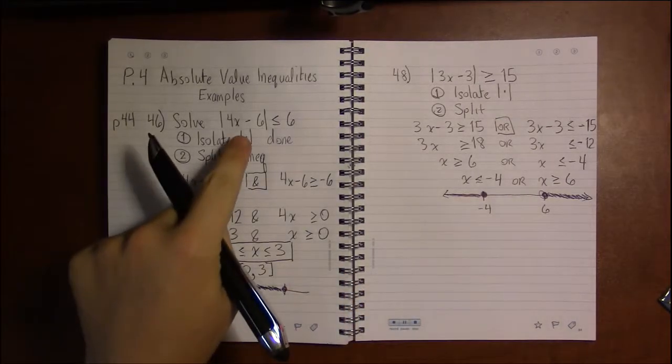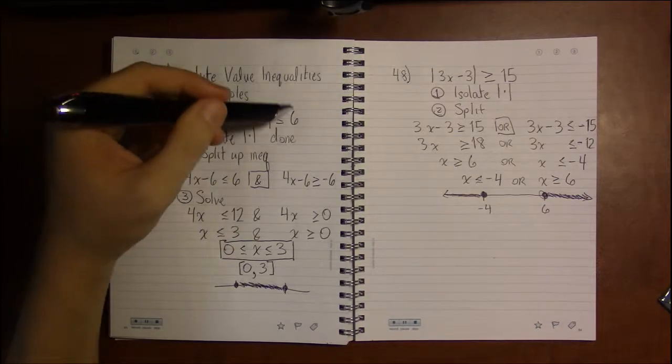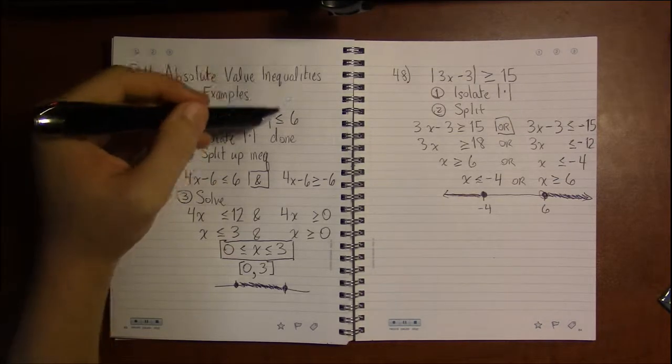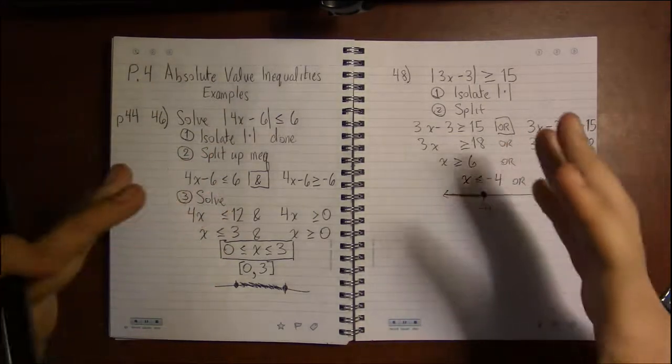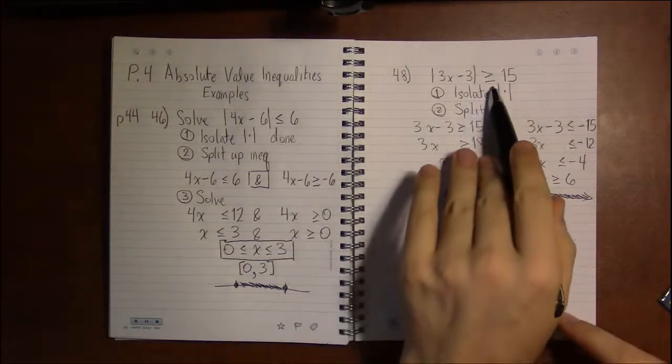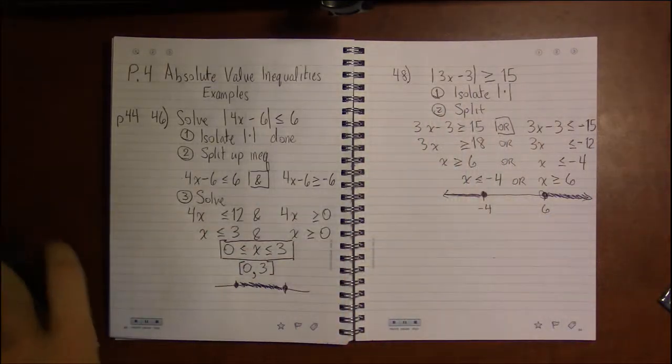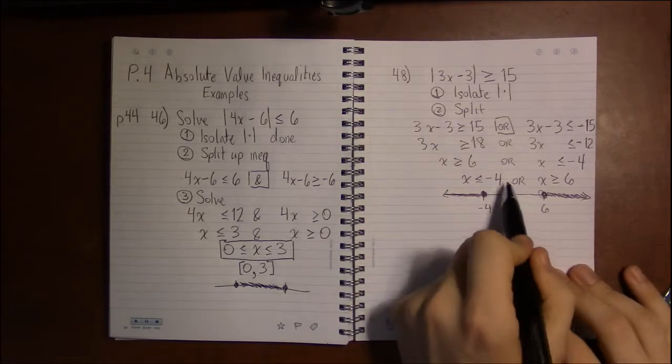Because with AND, we're saying this distance between 4x and 6 is no more than 6. You're at least this close, is what this says. When it's greater than or greater than or equal to, it's you're at least this far away.